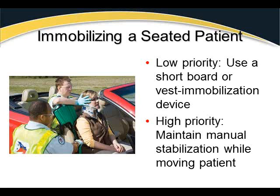To immobilize a seated patient with no immediate life threats, use a short board or vest-style immobilization device — this takes about five minutes to apply properly. For a high-priority patient, maintain manual C-spine and perform rapid extrication: wedge a backboard under the patient's buttocks, swivel in the seat, move the legs, move them as an inline unit onto the backboard, then immobilize.